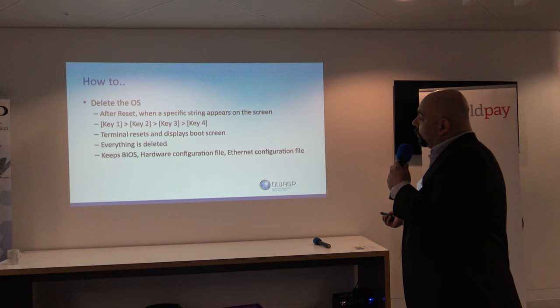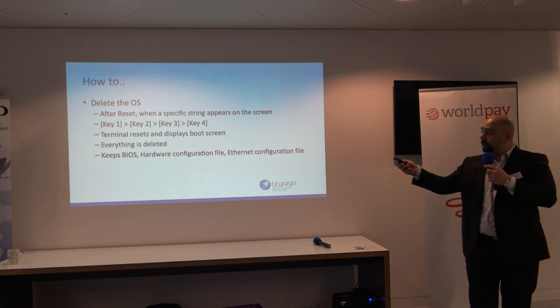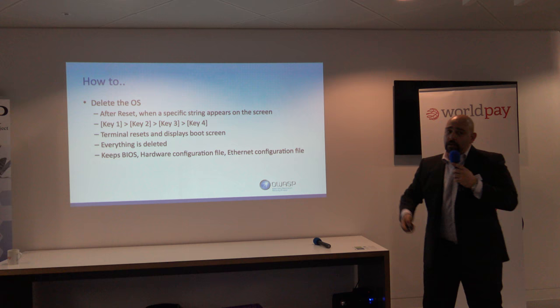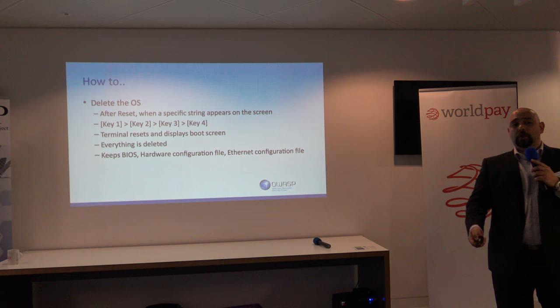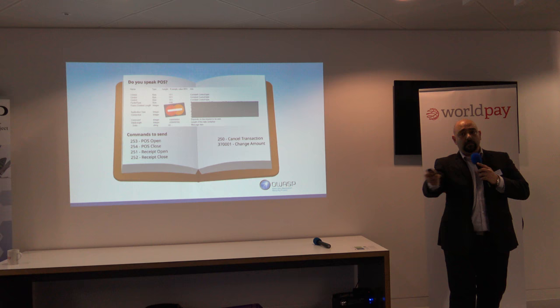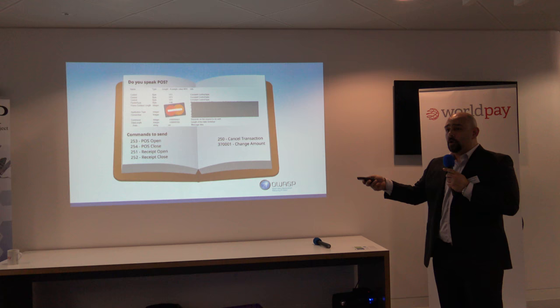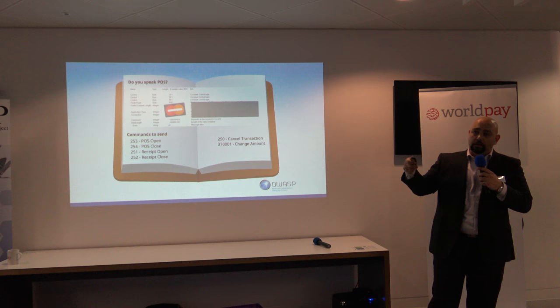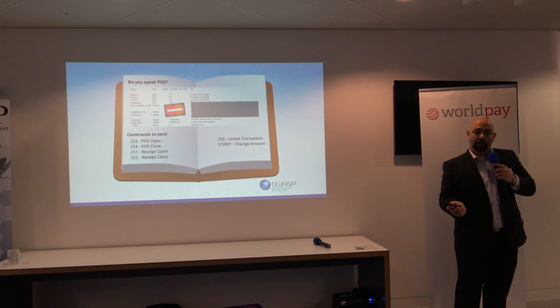There are tricks you can do if you play around with these systems. Every OS manufacturer has different paths to do these things, but imagine deleting the OS requires just four key combinations for a specific manufacturer — you need to know the combination and how to do it. The communication between the ECR and the POI is not encrypted, so if you start tampering with it, you'll figure out what commands to send.